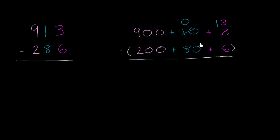Notice, I haven't changed the value. 900 plus 0 plus 13 is still 913. Now this solved the problem for the 1's place. I can now subtract 6 from 13. But it made the problem in the 10's place even worse. I now have to subtract 80 from 0.